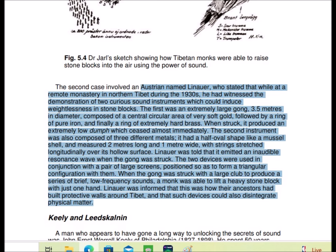Another case involves an Austrian named Linauer who stated that while at a remote monastery in northern Tibet during the 1930s, he had witnessed the demonstration of two curious sound instruments which could induce weightlessness in stone blocks. The first was an extremely large gong, three and a half meters in diameter, composed of a central circular area of very soft gold, followed by a ring of pure iron, and finally a ring of extremely hard brass.